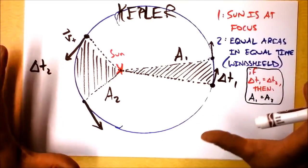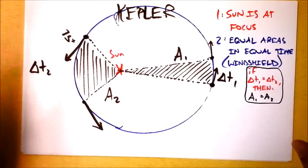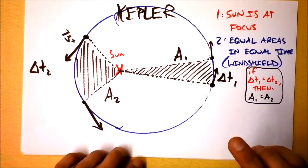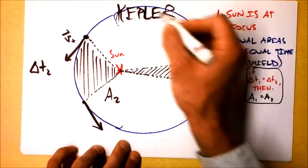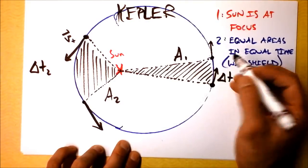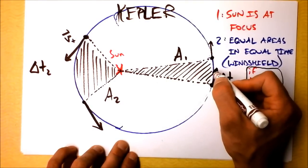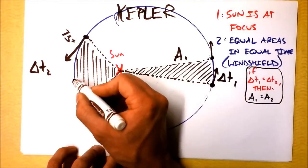Now, he learned this by pouring over tons of data, and he didn't have a computer, which I find incredibly respectable that he did this. So the Earth is, in fact, in an elliptical orbit around the Sun, and that means that the Earth is going slower when it's farther away from Sun and faster when it's closer to the Sun.